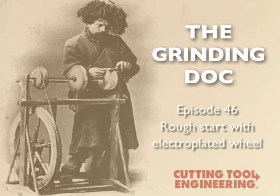We use electroplated wheels. The first parts have a horrible surface finish before it gradually improves. Why is this and is there a way around this?